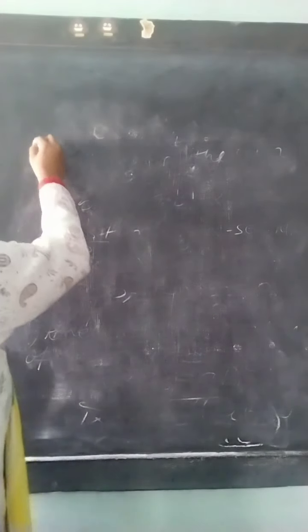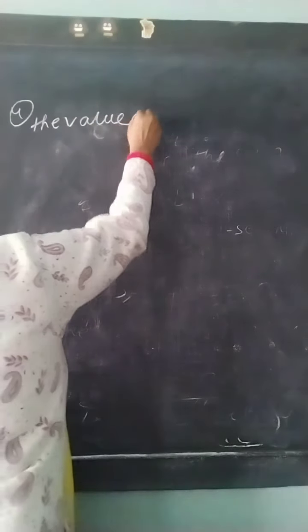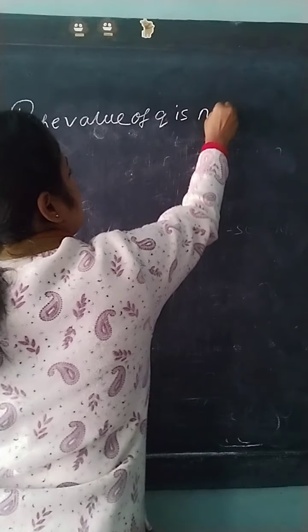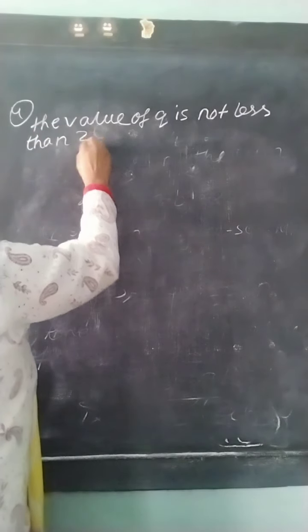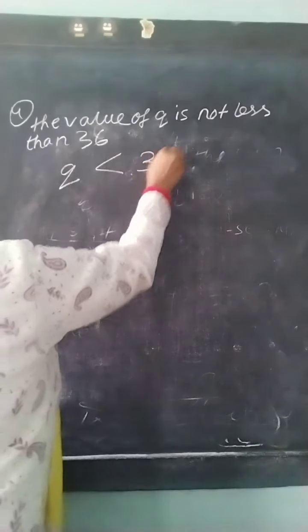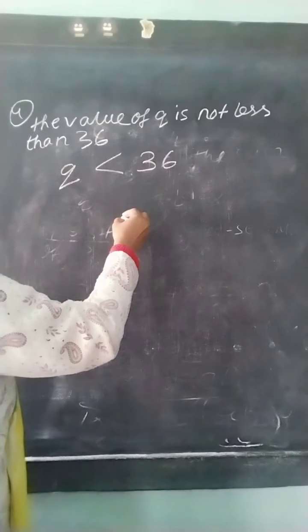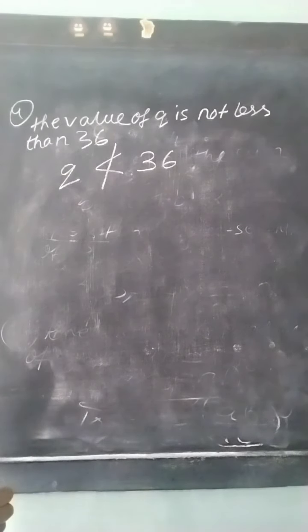Suppose it is given: the value of Q is not less than 36. This is sum number 4. Q less than 36 would use the less than symbol, but Q not less than 36 means Q is greater than or equal to 36. This is how we will do it.